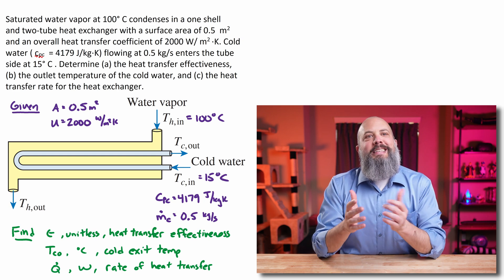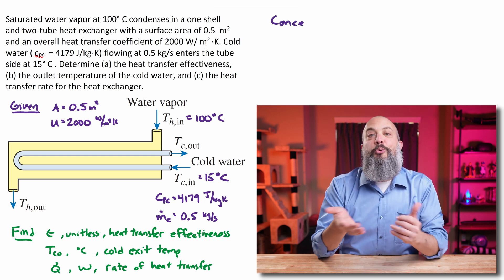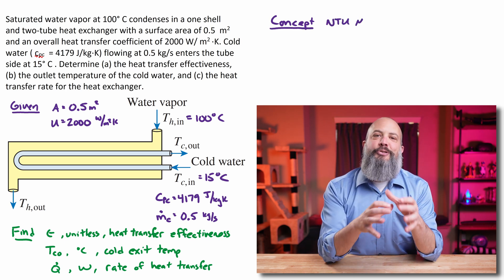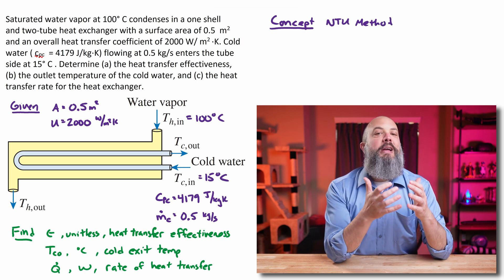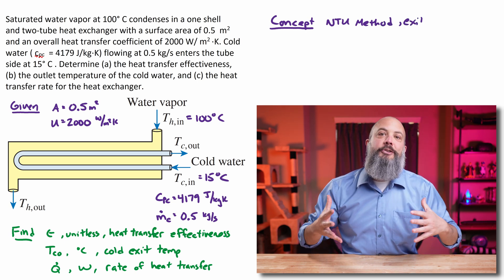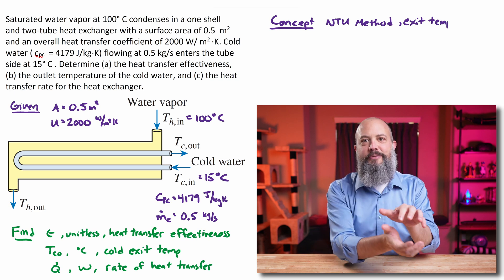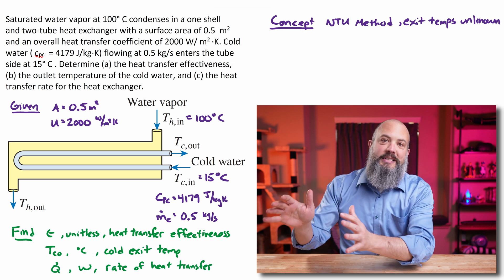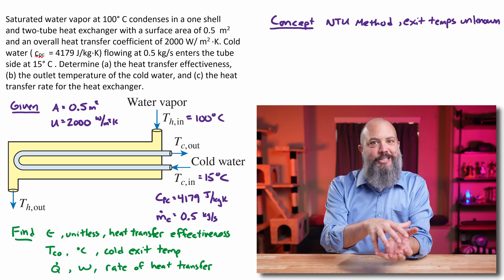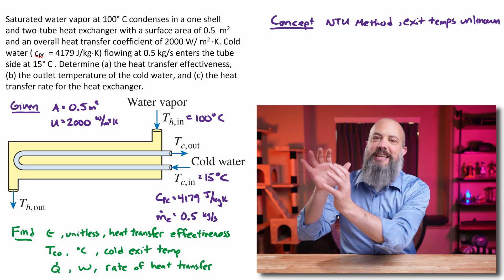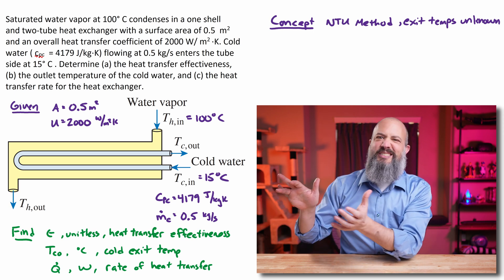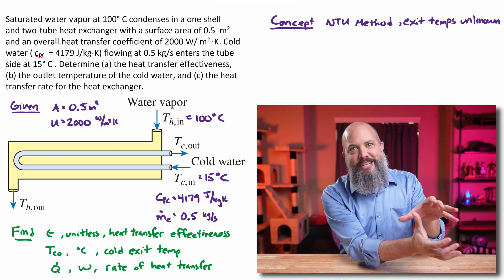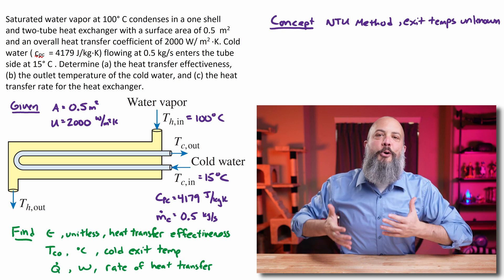The way to recognize an NTU, number of transfer units problem, is that you will usually be given UA, surface area and overall heat transfer coefficient. You usually know the information about the heat exchanger itself and your unknowns are exit temperatures. If you already know exit temperatures and you're trying to find information about the heat exchanger like the surface area, that's an LMTD, log mean temperature difference problem.